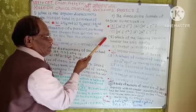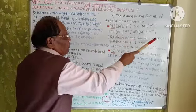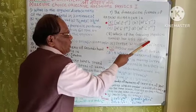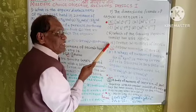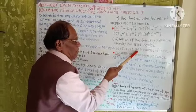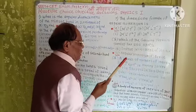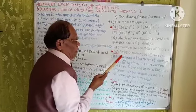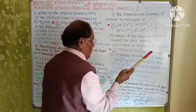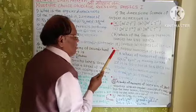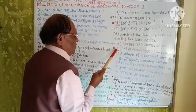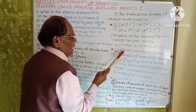Question 8: Which of the following physical quantities has the unit kilogram meter square per second? A) Torque, B) Moment of inertia, C) Angular momentum, D) Force. The correct option is C, i.e., angular momentum.